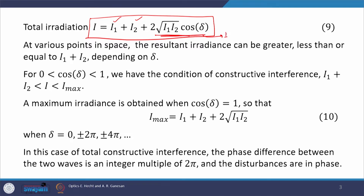We started with two point sources from which spherical waves emanate and overlap in a region of space. The point of observation P is very far from sources S1 and S2. Since P is very far, the waves observed there would be plane waves, because the radius of curvature of the spherical wavefront becomes almost infinite, so the spherical wavefront is treated as a plane wave at P.